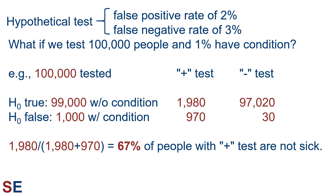This is the exact same scenario. The only thing that's changed is that now the percentage of individuals with the condition has been changed from 10% down to 1%. Now if we test 100,000 individuals, 99,000 will not have the condition, and 1,000 will have the condition. Of the 99,000 without the condition, 2% will test positive, so that's 1,980. The rest will test negative, as they should — that's 97,020. Of the 1,000 individuals with the condition, 3% will test negative, so that's 30. The remaining 970 will test positive, as they should.